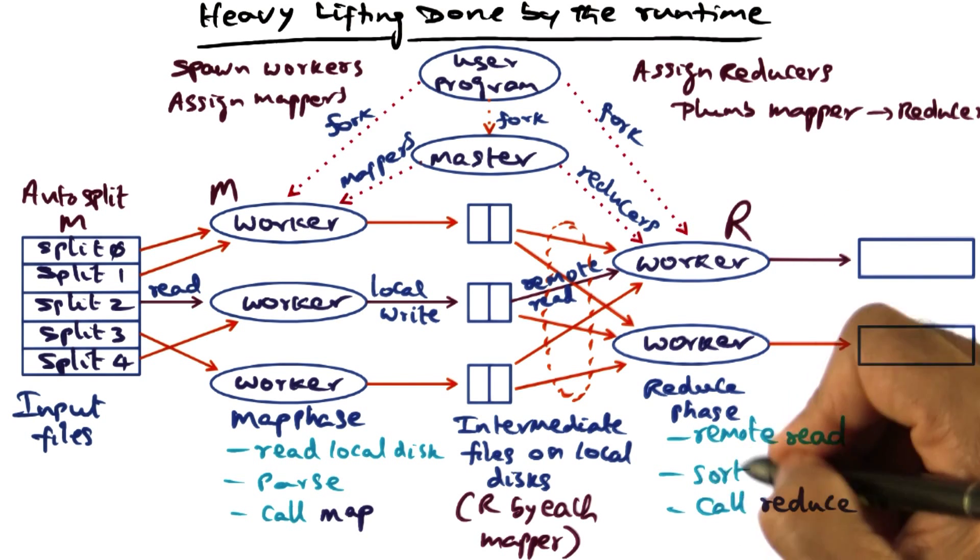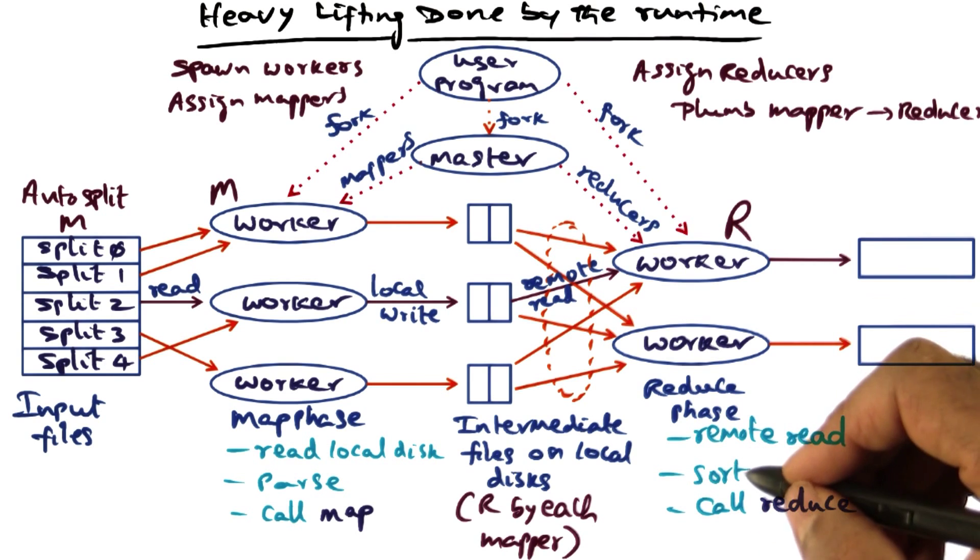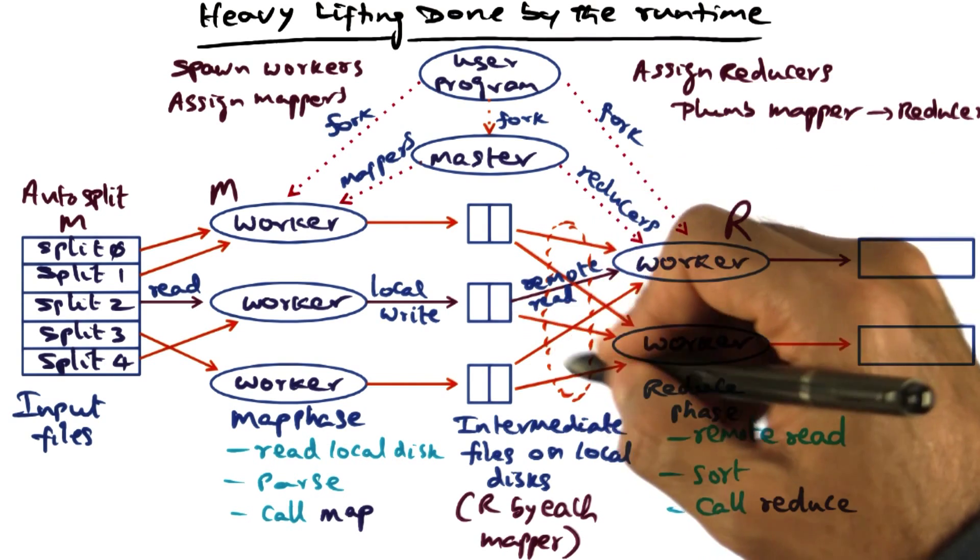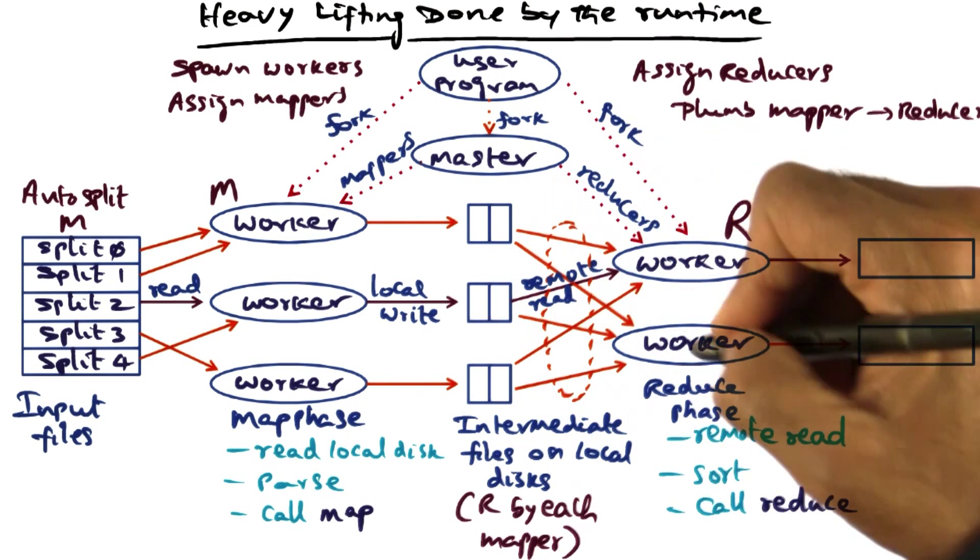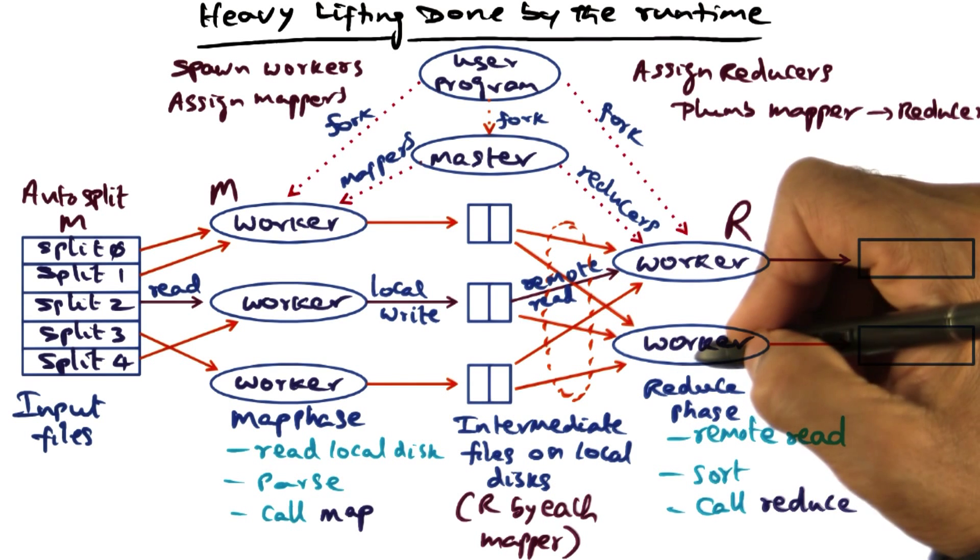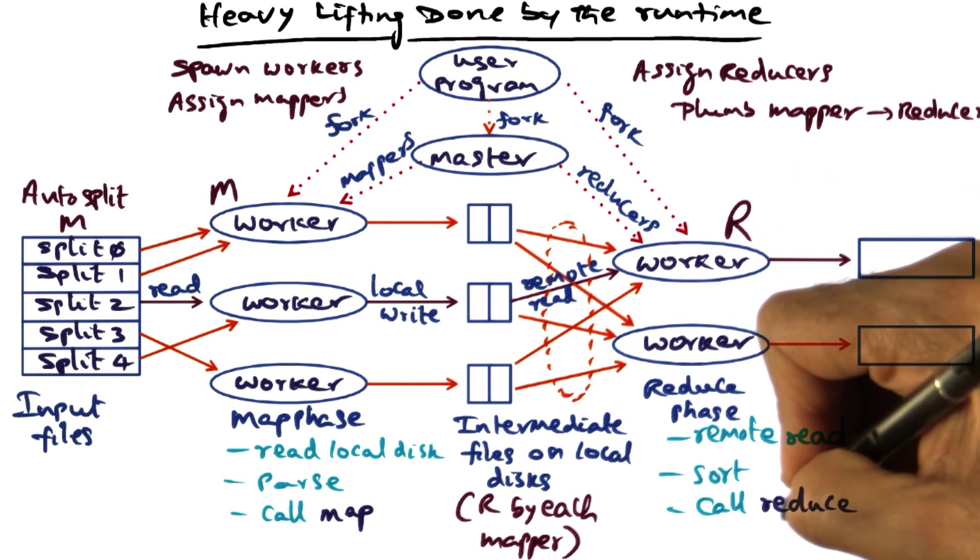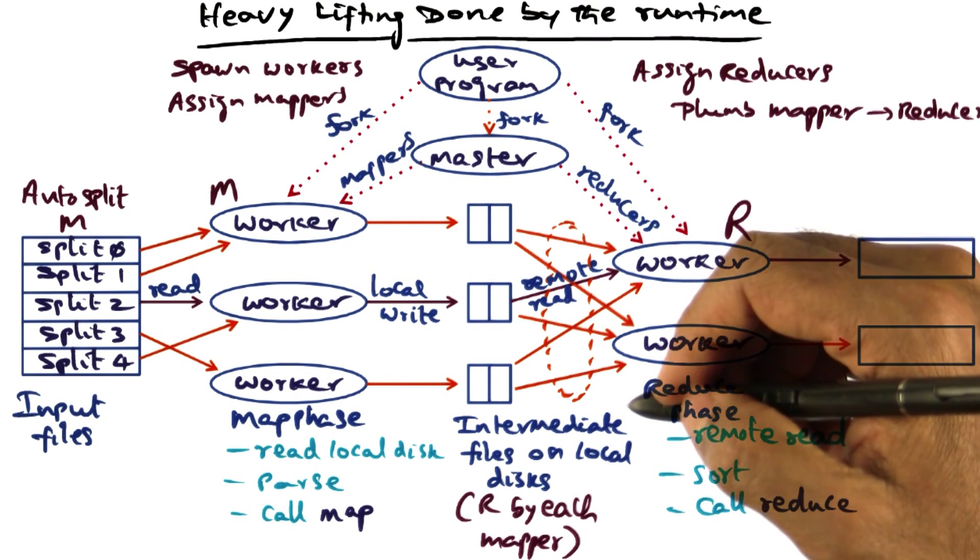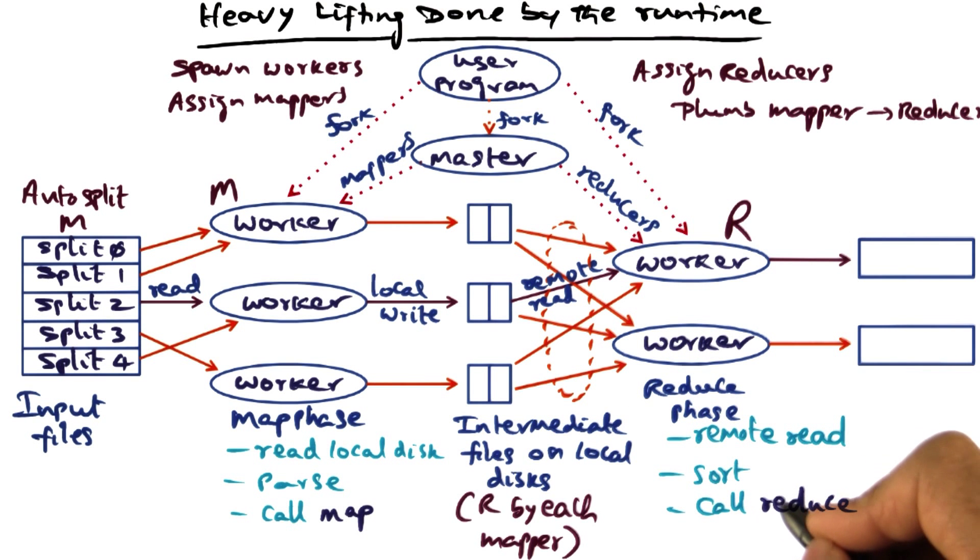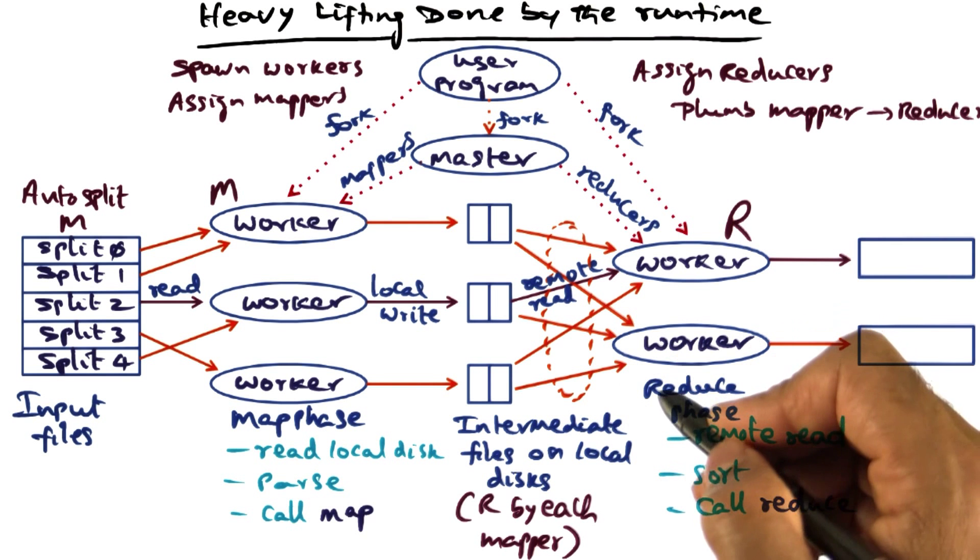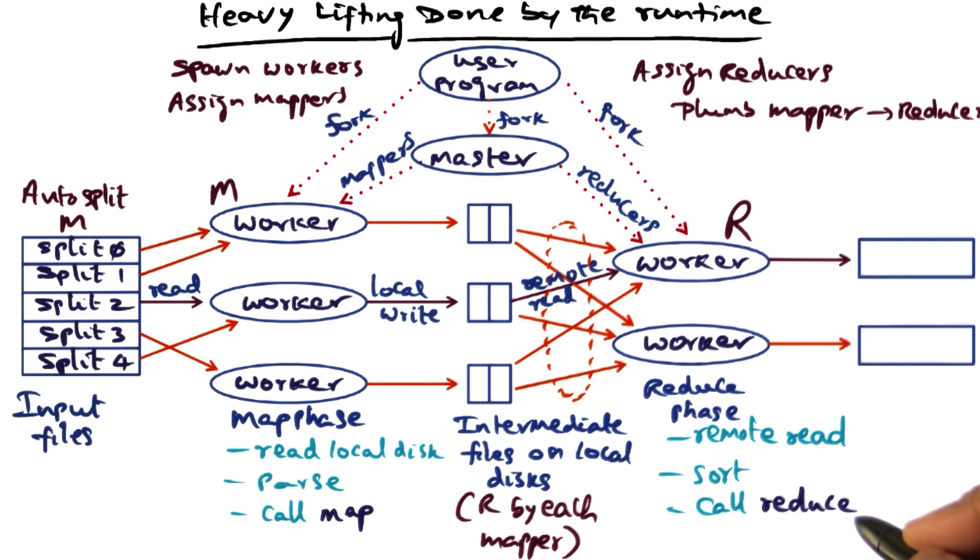The sorting that is being done as part of the programming framework may be to sort the input that is coming in from all of these different mappers so that all the same keys are together in the input data set that is going to be given to the reduce function. And once such sorting has been done, the programming framework will call the user supplied reduce function for each key with the set of intermediate values so that the reduce function can do its thing, which is domain specific.